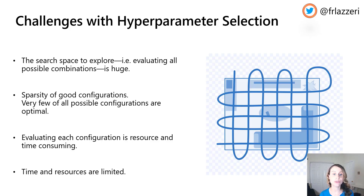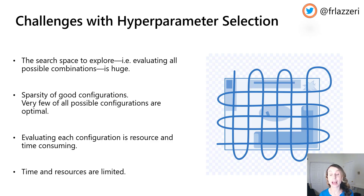There is simply no substitute for understanding the principle of each algorithm and understanding the system that generated your data. All of these steps are actually pretty time consuming and it's a very iterative process — not only selecting the features, but also choosing an algorithm and spending a lot of time on hyperparameter tuning. For these reasons, automated machine learning can be very helpful when you want to try different machine learning algorithms and run different machine learning pipelines at the same time in parallel.